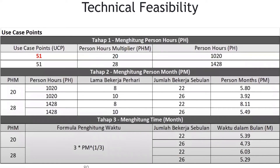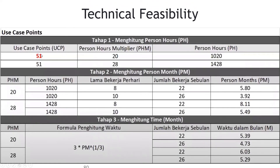Use case point kita dapat dari use case diagram tadi, misalnya hitung 51. Kita bisa mengetahui berapa jumlah orangnya — kalau misalnya dikerjakan dalam waktu 6 hari, Sabtu masuk, itu butuh berapa. Kalau misalnya ada lembur, jadi berapa — itu semua sudah jelas di sini.